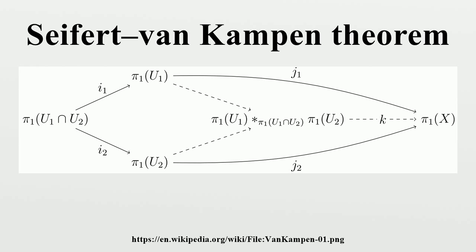Usually the morphisms induced by inclusion in this theorem are not themselves injective, and the more precise version of the statement is in terms of push-outs of groups. Unfortunately, the theorem as given above does not compute the fundamental group of the circle, which is the most important basic example in algebraic topology. The reason is that the circle cannot be realized as the union of two open sets with connected intersection.